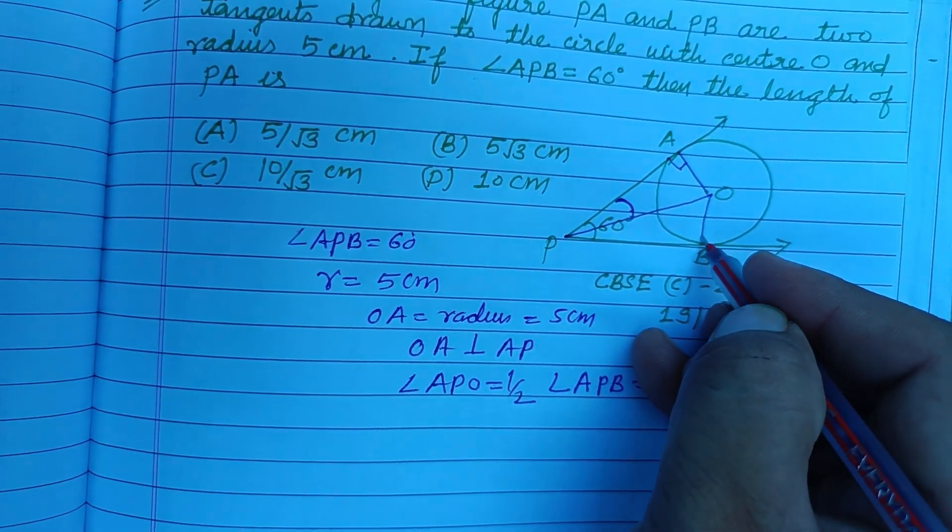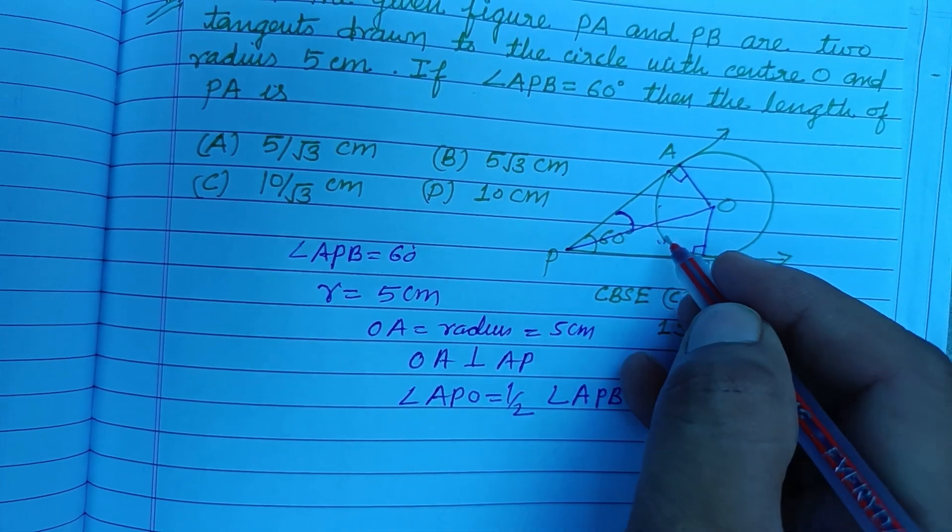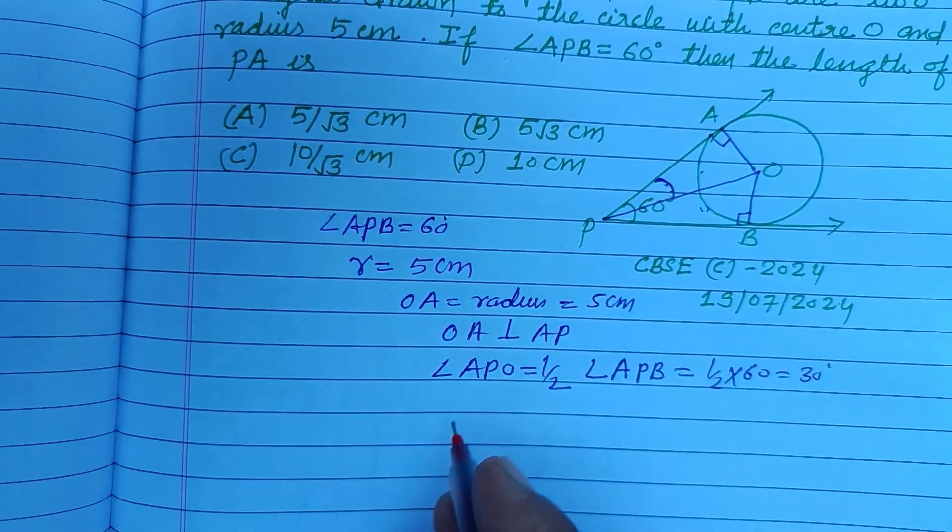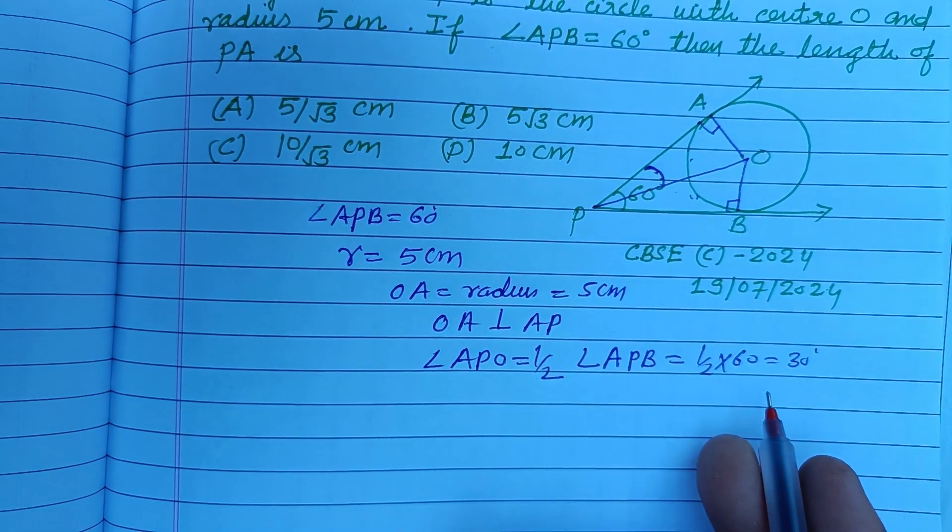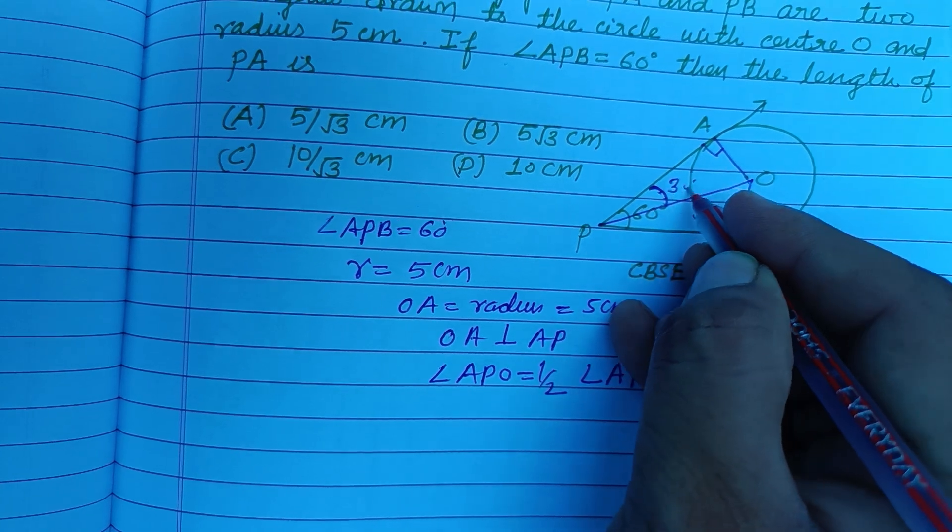If you also draw perpendicular on this or join this, you will get two triangles which are congruent to each other. Therefore these angles are equal. So we take APO as half of the angle APB. So this is 30.